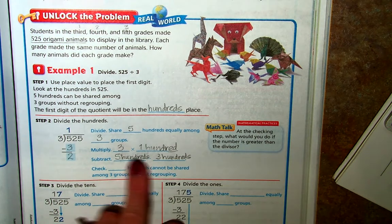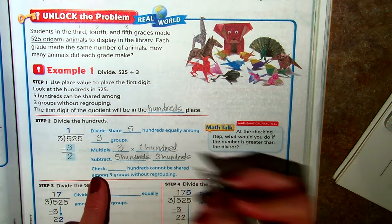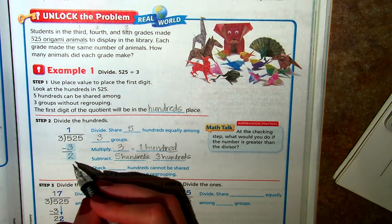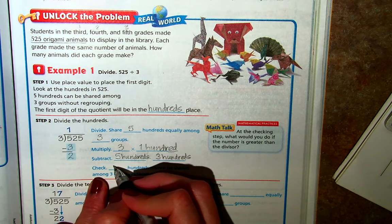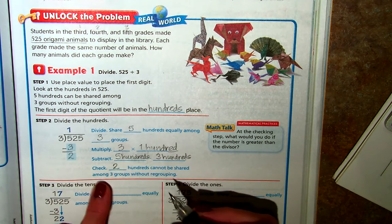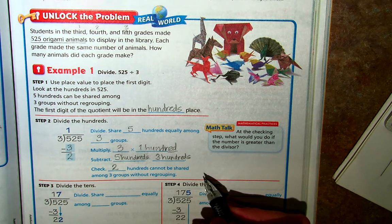So five hundreds minus three hundreds, and then we check. When we subtract these, we get 2.